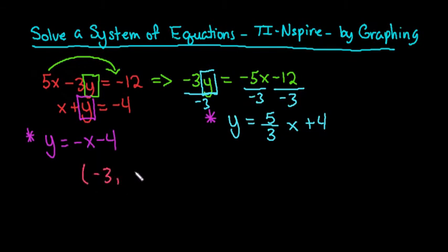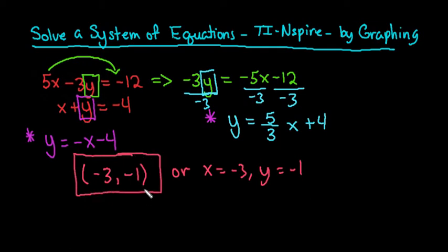So the solution would be negative 3 comma negative 1. Or you could write it as x equals negative 3, y equals negative 1. And either of those are acceptable, but since it's a graph, it makes more sense just to have it this way.